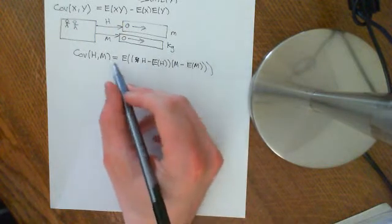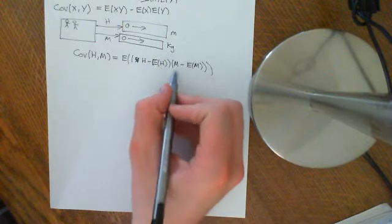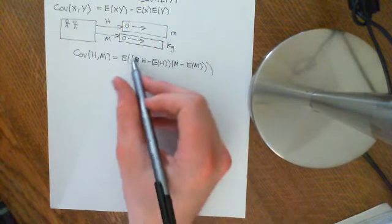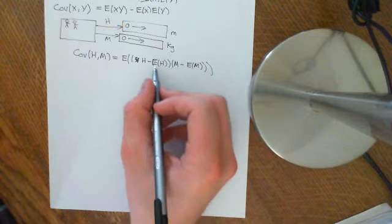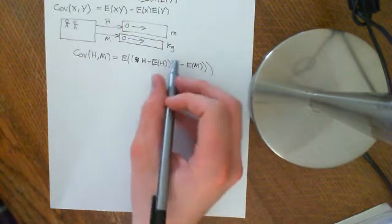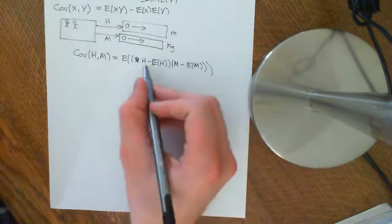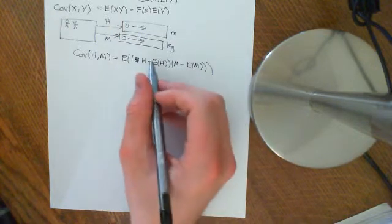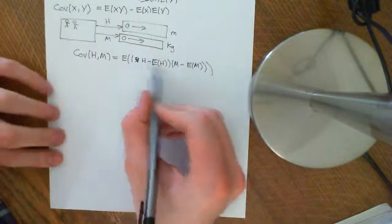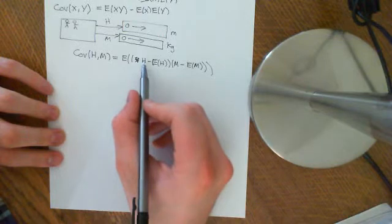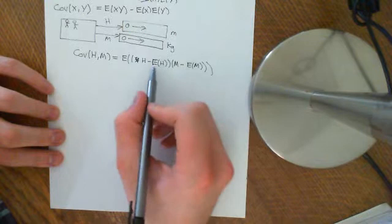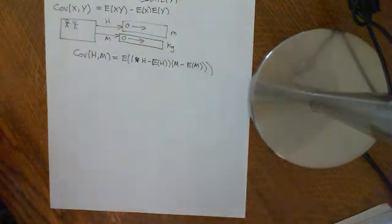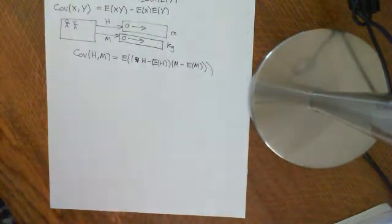If the data is positively correlated, the covariance will be positive — because when height is above average and mass is also above average most of the time, you get a positive number. If height is below average and mass is also below average, two negative numbers multiply to give a positive contribution. You get negative values when height is above average and mass is below average, or vice versa. Overall, the covariance measures how correlated the two variables are.